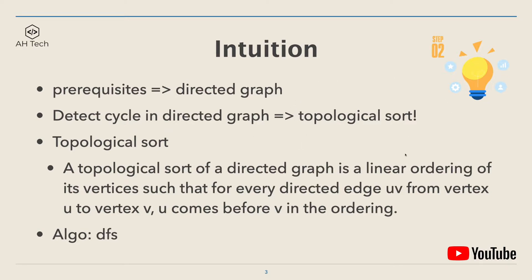A common algorithm to solve this is topological sort. A topological sort of a directed graph is a linear ordering of its vertices such that for every directed edge UV from node U to V, U always comes before V in the ordering. The implementation algorithm is DFS — depth first search.